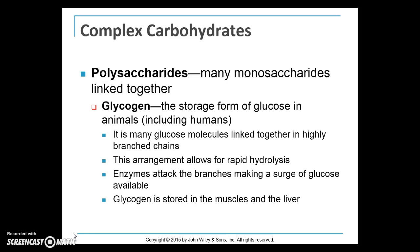Complex carbohydrates are polysaccharides that are generally not sweet-tasting the way simple carbohydrates are. They include glycogen in animals and starches and fibers in plants. 'Poly' means many, so polysaccharides are many monosaccharides linked together. Glycogen is the storage form of glucose in animals — in humans it's many glucose molecules linked in highly branched chains, allowing for rapid breakdown to release glucose when needed. Glycogen is typically stored in the muscles and liver.